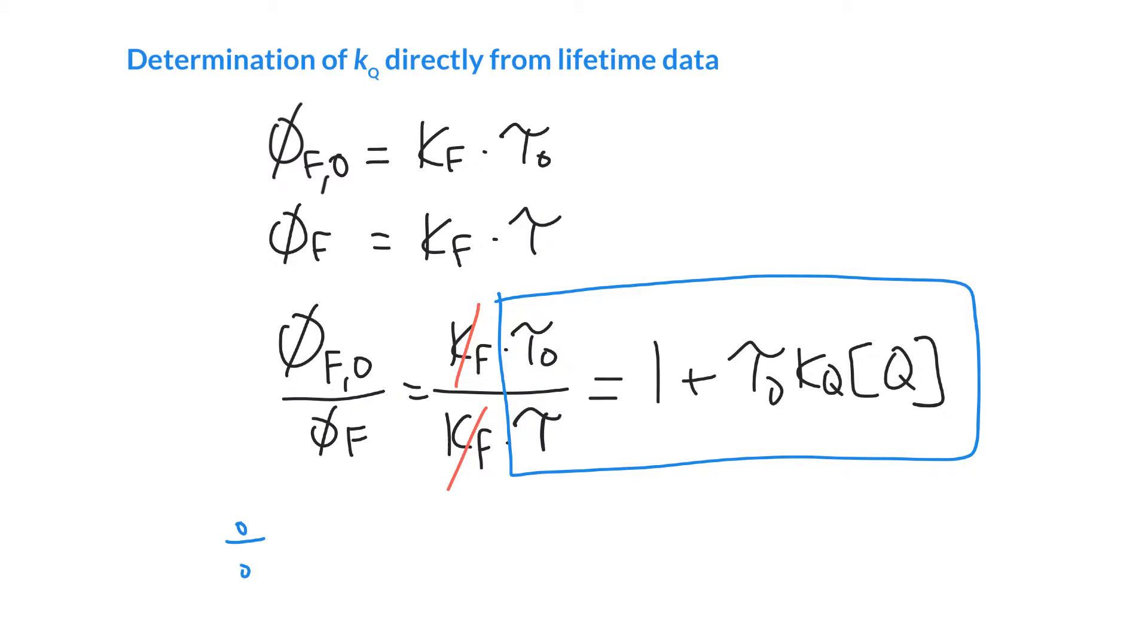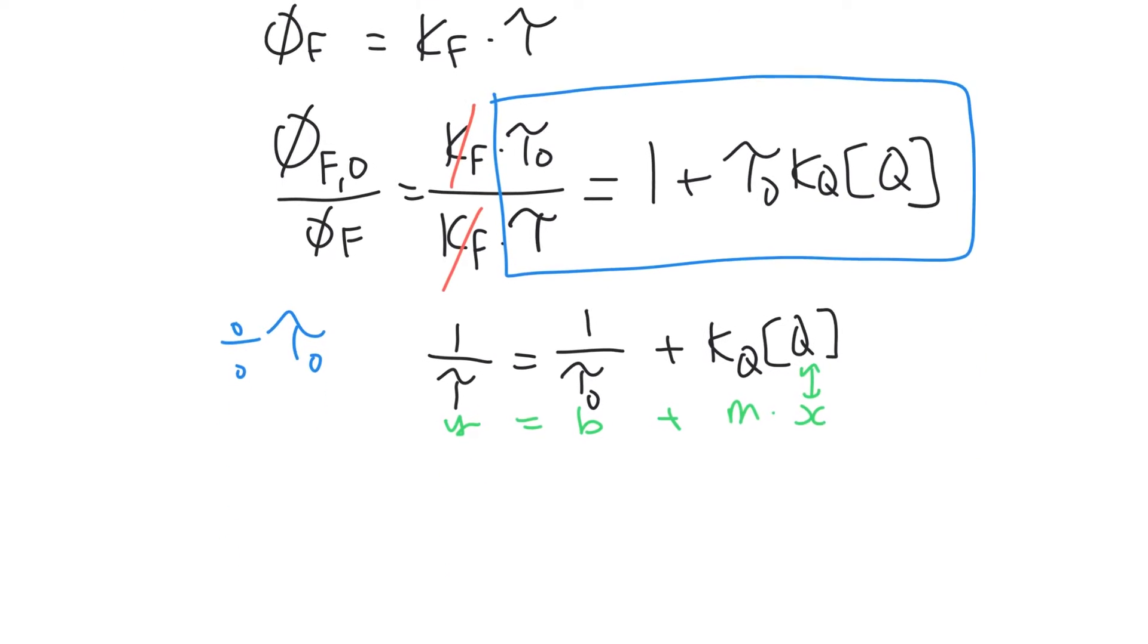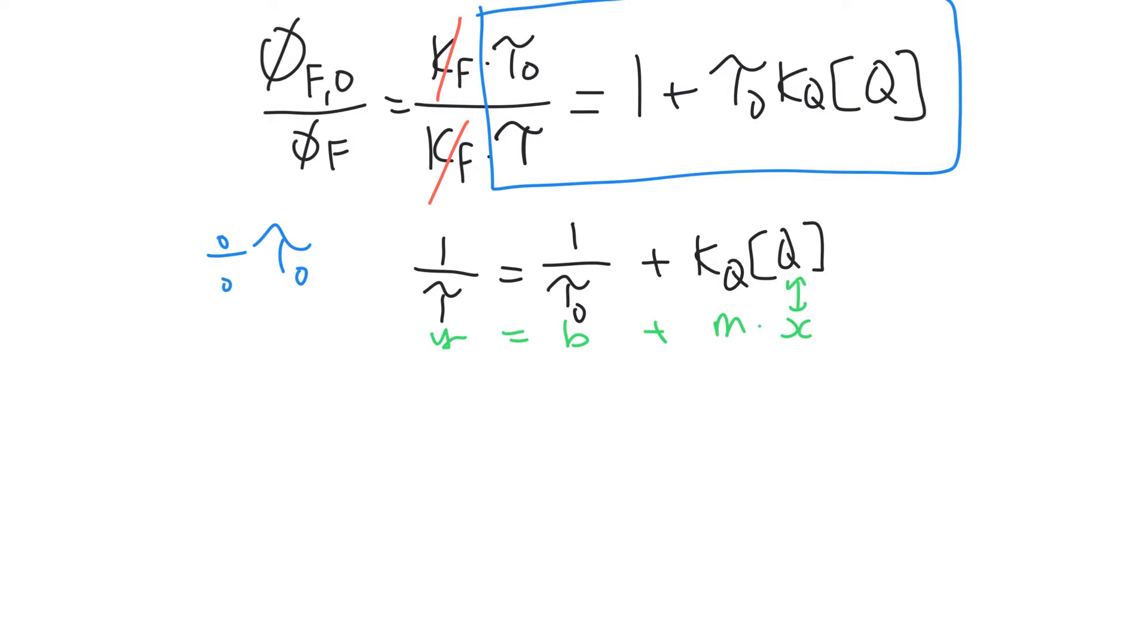We can divide both sides by τ0, the lifetime in the absence of a quencher. That gives us 1/τ, the lifetime with the quencher, equals 1/τ0 plus kq times [Q]. We've got one of these brilliant y equals mx plus b equations. If y is our 1/τ and x is our quencher concentration, then our rate constant is just the slope of that graph. So we can make this plot to directly determine the quencher rate constant.